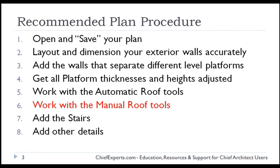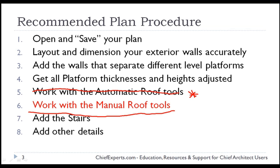Let me review what I covered last class - I'll run through this really fast. Last class we talked about automatic roofs, and the process to keep in mind when going through a plan, especially if you're newer to Chief: save your plan, layout your exterior walls accurately, and as you're adding automatic roofs, add the walls that separate the different platforms. The sooner you get your platforms, ceiling heights, and everything adjusted properly, the quicker it will go and the more automatic roof you'll get. Get your platform thicknesses adjusted, work with the automatic roofs to a certain point, and then stop using that function altogether and do everything manually.